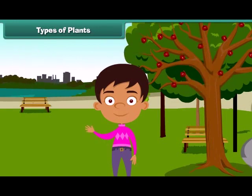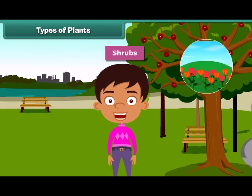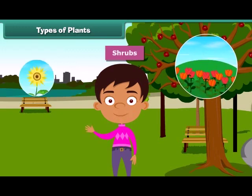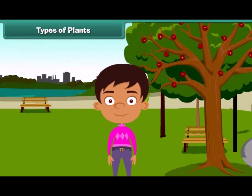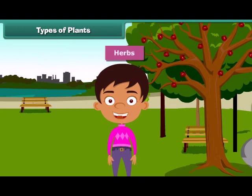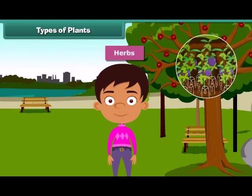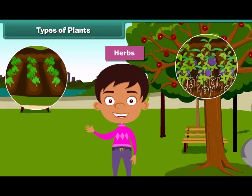Plants which are smaller than trees are called shrubs, such as rose and sunflower plant. Besides, some plants are very small and are called herbs. Brinjal and spinach are examples of herbs.